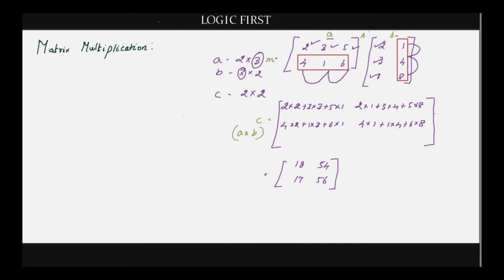Let M and N denote the number of rows and columns of matrix A. Similarly, P and Q denote the number of rows and columns of matrix B. The condition here is that N must equal P. If N is not equal to P, it is impossible to multiply those two matrices. Now let's write the program.